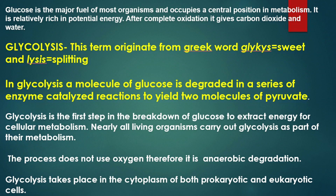Now we will understand the term glycolysis. This term is originated from the Greek word 'glykis' which means sweet, and 'lysis' which means splitting. So glycolysis is the splitting of a sweet compound. In glycolysis, a molecule of glucose is degraded into two molecules of pyruvate. Glycolysis is the first step in the breakdown of glucose. It is an anaerobic process and occurs in the cytoplasm of all living organisms.